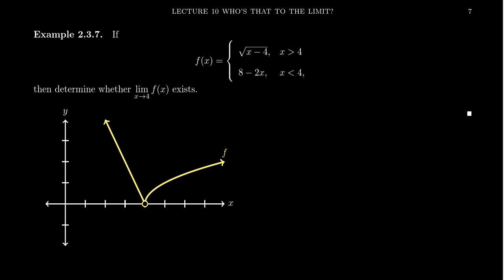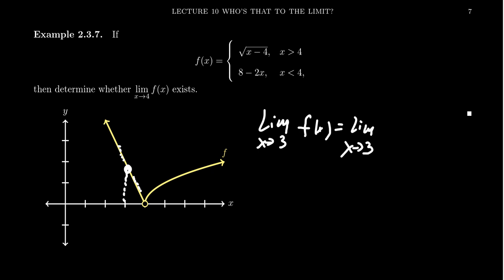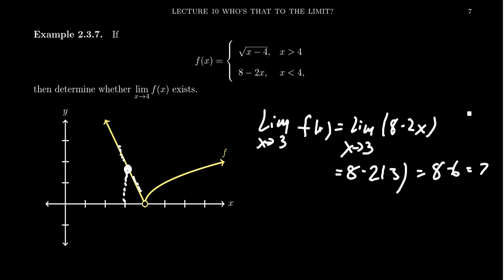In terms of calculating limits, if you're looking for any number in the domain that's not associated with a switch — like x equals 3 — then a little bit to the left of x equals 3 it looks like 8 minus 2x, and a little bit to the right it still looks like 8 minus 2x. Therefore, the limit as x approaches 3 of f of x is just the same as the limit as x approaches 3 of 8 minus 2x. Near x equals 3, the function just looks like a line, so the limit is just evaluation: 8 minus 2 times 3 equals 8 minus 6, which equals 2.